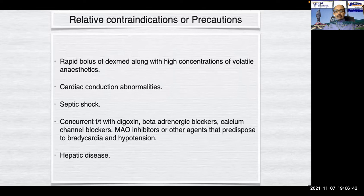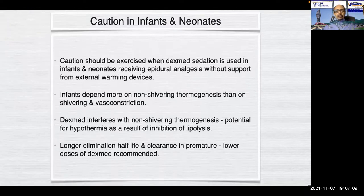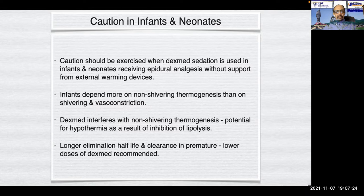Rapid bolus of dexmedetomidine along with higher concentrations of volatile anesthetics should be avoided. Caution is needed with cardiac conduction abnormalities, septic shock, and concurrent treatment with digoxin, beta-adrenergic blockers, calcium channel blockers, and other agents predisposing to bradycardia or hypotension. Dexmedetomidine should be used with caution in hepatic disease as sedation may be prolonged. Caution in infants and neonates is essential — infants depend more on non-shivering thermogenesis, and dexmedetomidine interferes with this, creating potential for hypothermia. Lower doses are recommended in premature neonates due to longer elimination half-life and reduced clearance.